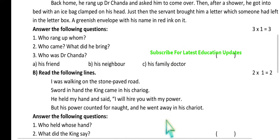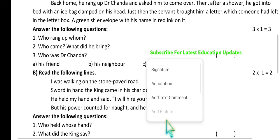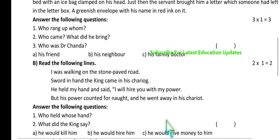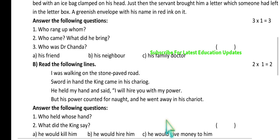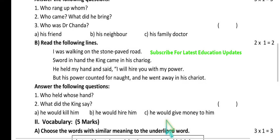Now let us go to the stanza of a poem: 'I was walking on the stone-paved road, sword in hand. The king came in his chariot. He held my hand and said, I'll hire you with my power. But his power counted for naught and he went away in his chariot.' Look at the stanza questions here.